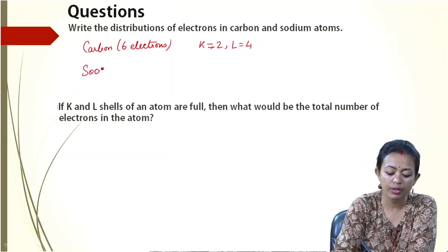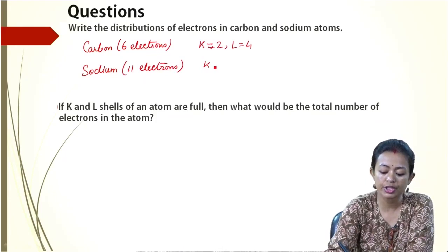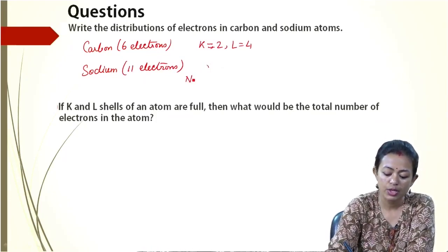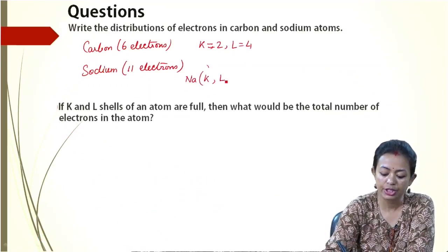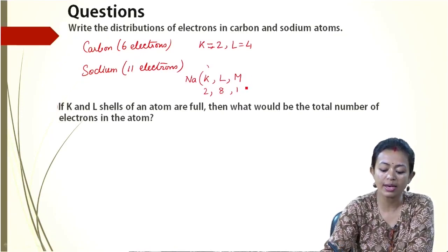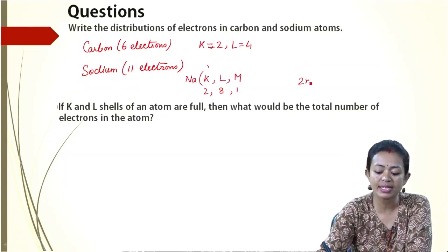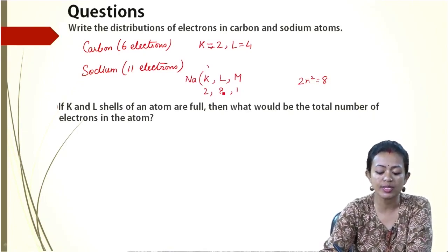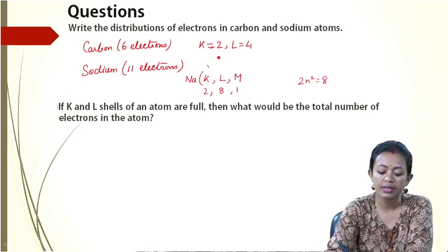Next, for sodium — sodium has 11 electrons. So for sodium we have K shell, L shell, and M shell. In the first shell 2, then 8, so 2 plus 8 is 10, and 10 plus 1 is 11. We could not write in M unless we filled up L first. Once L is filled to 8 — because the maximum in the second shell by twice n squared is 8 — the remaining 1 electron goes to the M shell. So the distribution of electrons in sodium is 2, 8, 1, whereas for carbon it is 2 and 4.